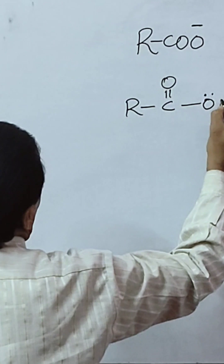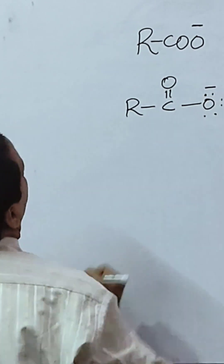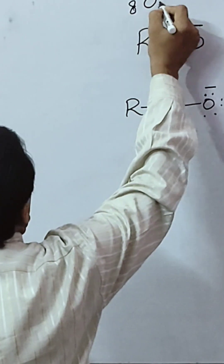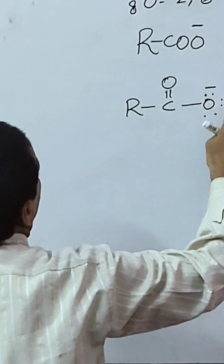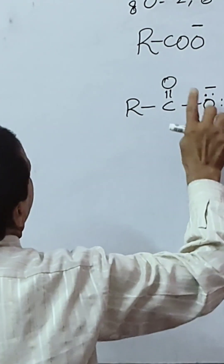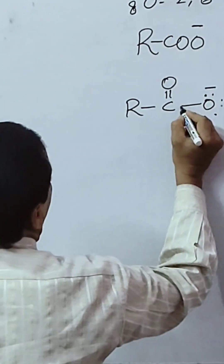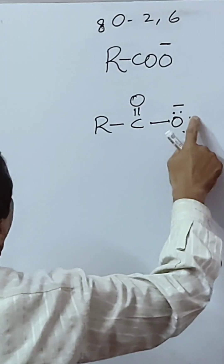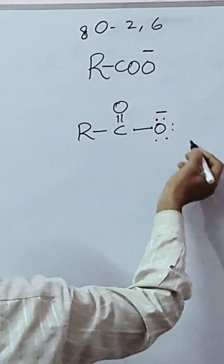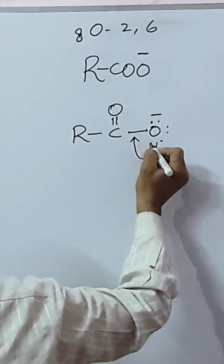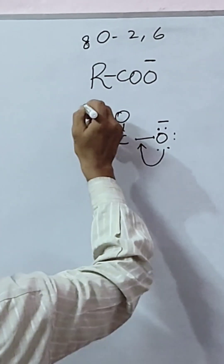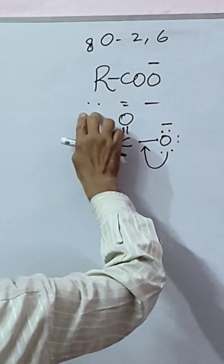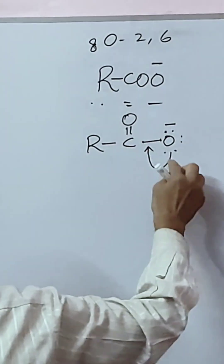This is a carboxylate ion, as shown. We have two electrons plus two electrons — two electrons shared between atoms — and this is called a covalent bond.